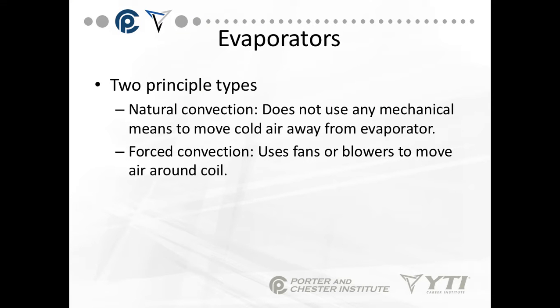Let's start off with what evaporators are and the different types. We have two principal types: natural convection, which doesn't use any mechanical means to move air through the evaporator, and forced convection, which uses fans or blowers. Natural convection is found heavily in extremely heavy process cooling or frozen food warehouses. Forced convection is the one you're going to find most frequently.